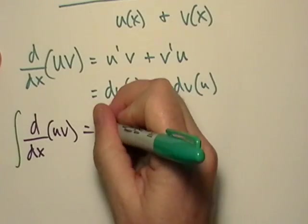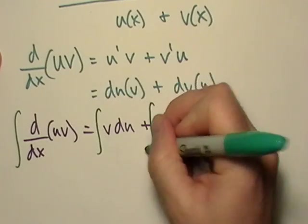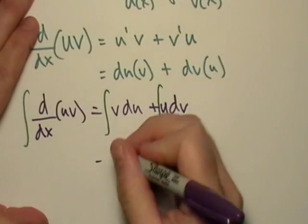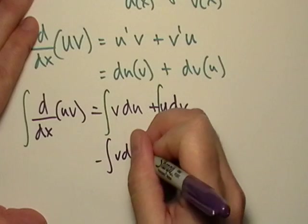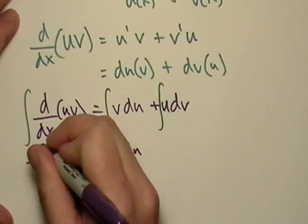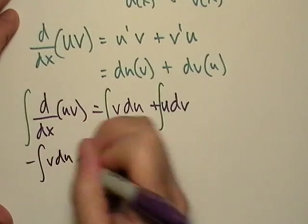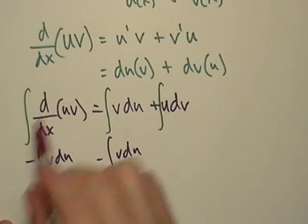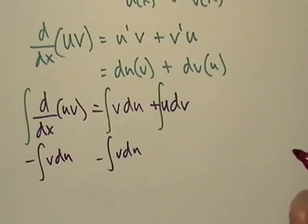Let's integrate each one of these things. Now what I'm going to do is I'm going to subtract v du from both sides. But before that happens, what happens over here when I integrate a derivative? It just kind of cancels out, right?